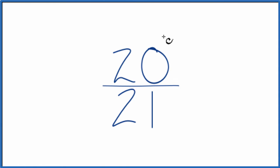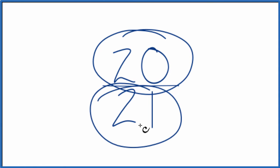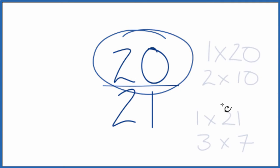To do that we need to find a common factor, something that goes into 20 and 21 evenly. So these are the factors for 20 and 21.